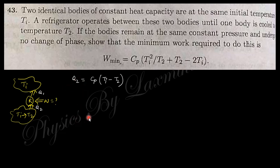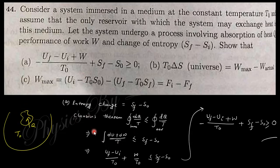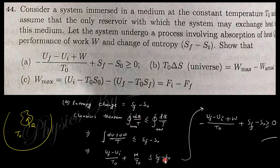The next question cannot be fully solved at this moment, but partially: consider a system immersed in a medium at constant temperature T₀, with that medium as the only reservoir. The system undergoes a process involving absorption of heat Q and work W. Using the entropy change relation and the first law dQ = dU + dW, we can find the expression, though this cannot be completed fully here.